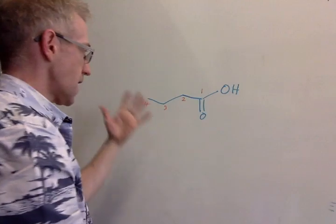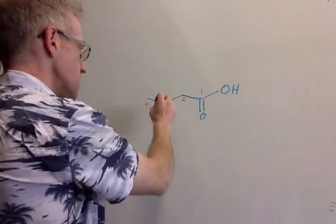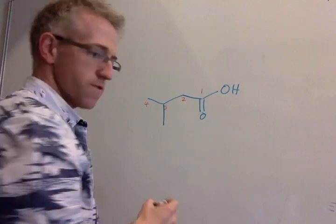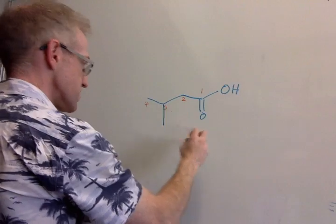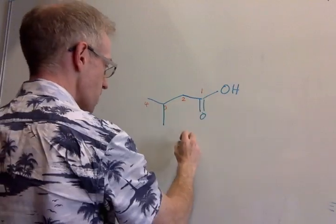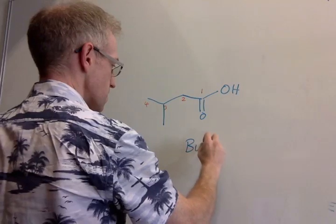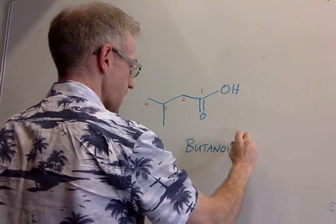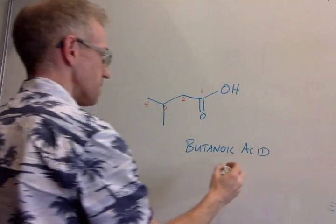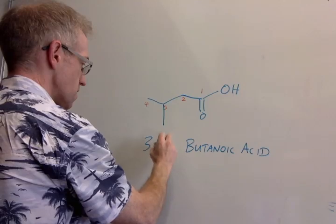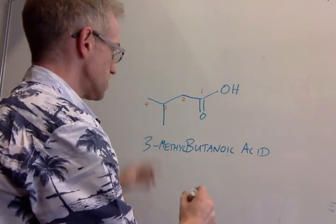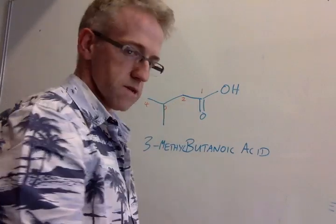So if we happened here to have a methyl group in the three position or something, then you'd call this one, two, three, four-carbon chain, so it's butanoic acid again. And to denote where the substituent is, you just put this up front, so 3-methyl butanoic acid.